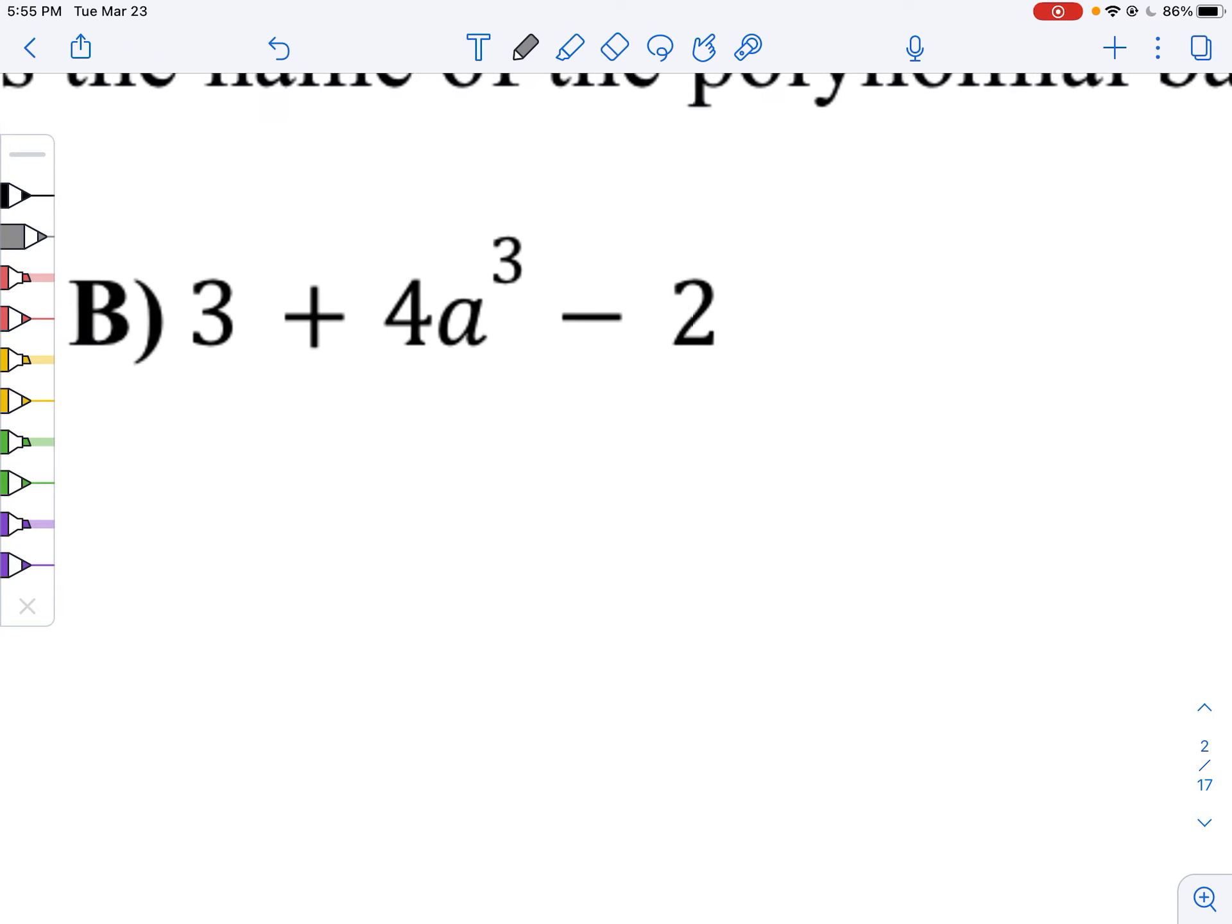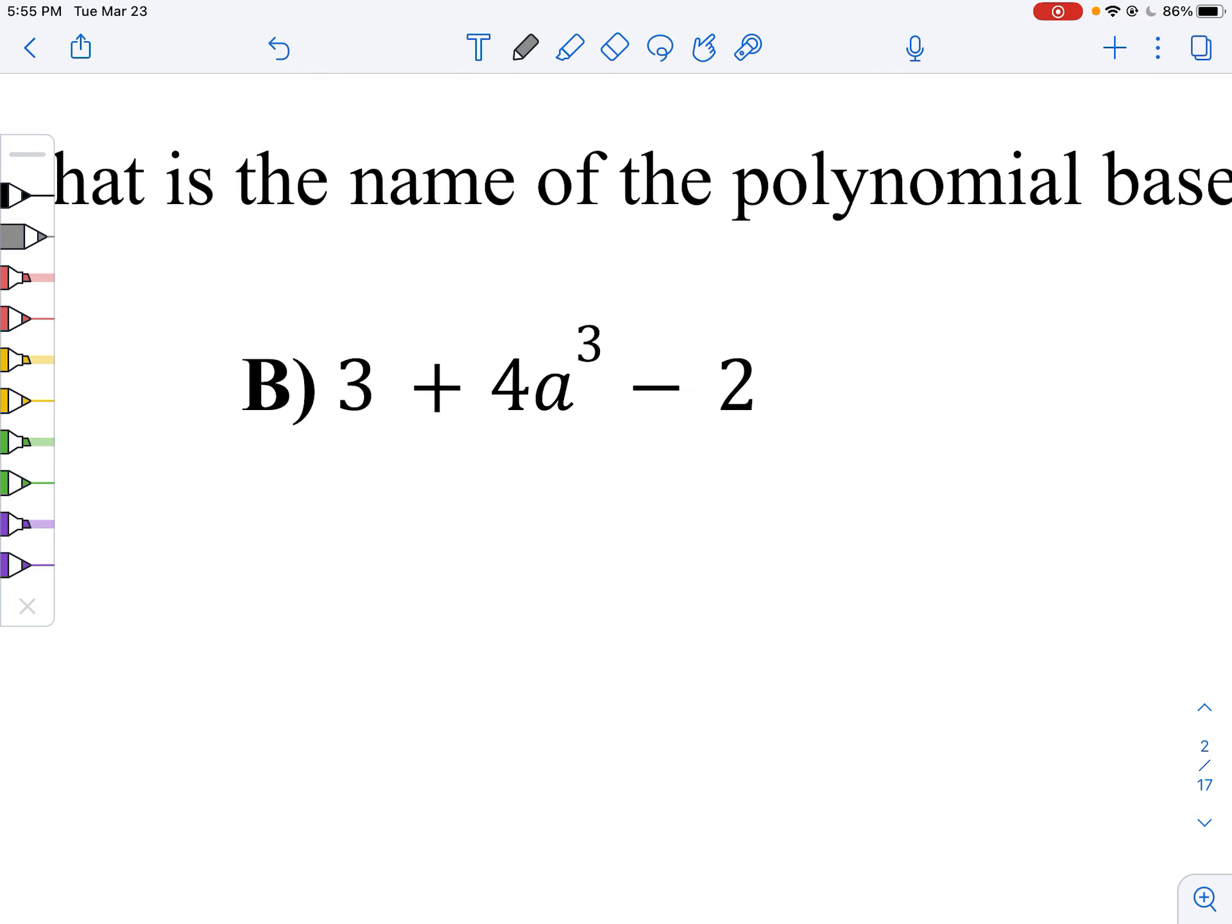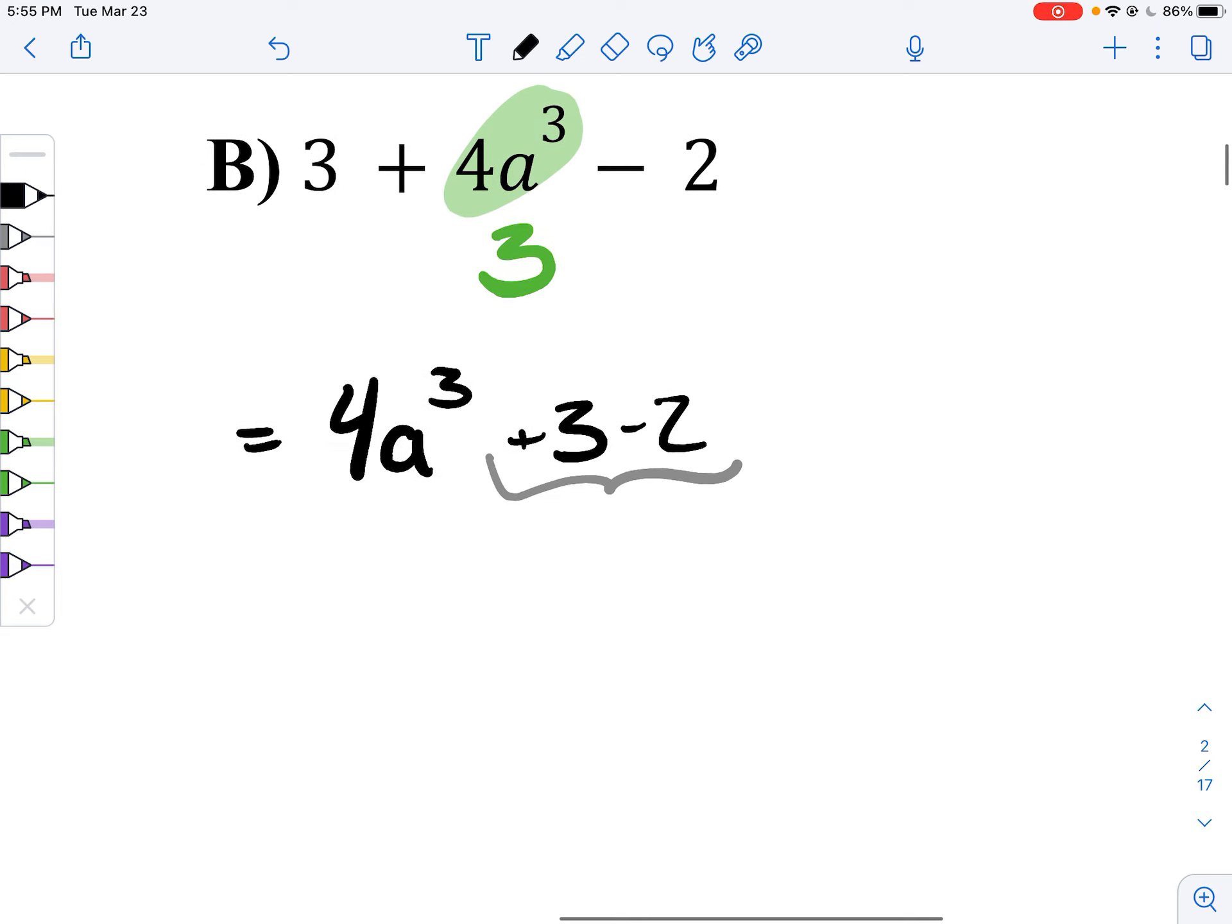Now, let's look at this guy. We need to put them in order of exponents. We've got 4a cubed first. And then we just have these normal guys after that. So, we've got 4a cubed plus three minus two, but three minus two is one, so we can even simplify this even further. That's 4a cubed plus one.